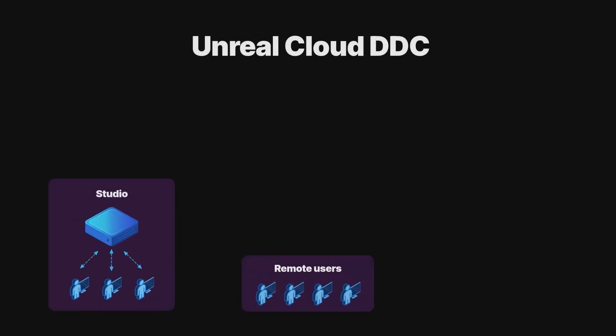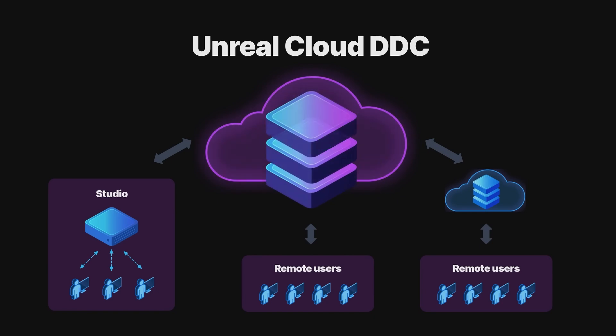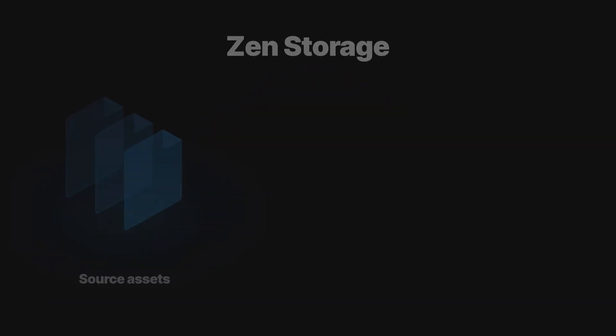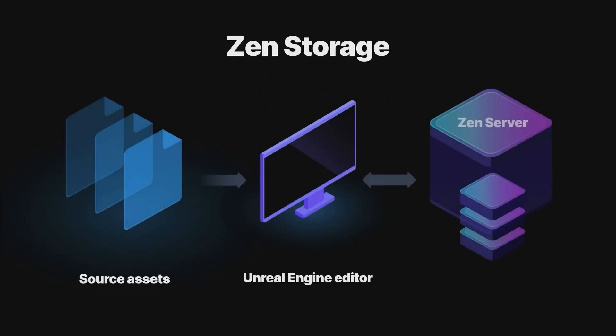New in this release is Unreal Cloud DDC, a self-hosted cloud storage system for the Unreal Engine derived data cache. Designed for distributed users and teams, it enables you to efficiently share Unreal Engine cached data across public network connections. Our local DDC also now uses a new server architecture, offering improved data conditioning performance, faster load times and CI workflows, and other benefits.